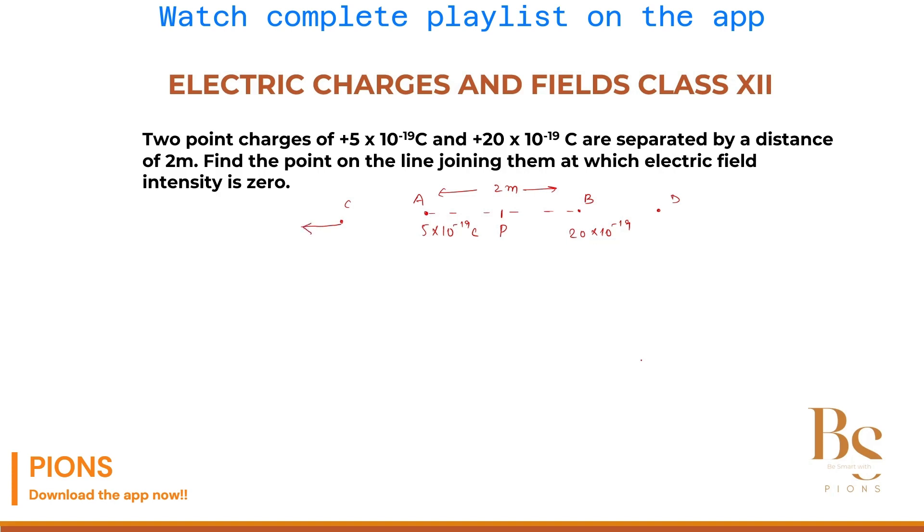Now at this point C, due to the charge at A, it is outward. Now electric field due to B, again outward, away from the charge. Both away are adding up. Both are pointing in the same direction. So it can't be zero. Here due to B outward, due to A also away from the charge outward. So again they are adding. They can't be zero over there.